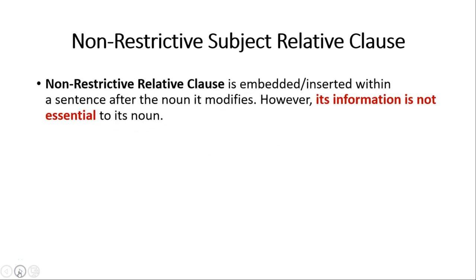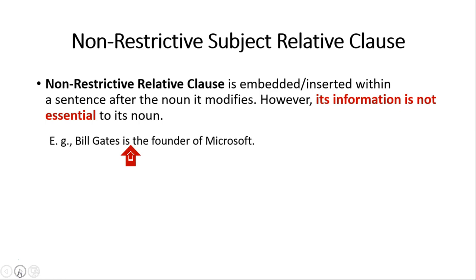Now let's talk about the non-restrictive subject relative clause. A non-restrictive relative clause is embedded within a sentence right after the noun it modifies. However, its information is not essential to the noun. For example: 'Bill Gates is the founder of Microsoft.' This sentence stands alone. We can introduce additional information about Bill Gates that does not restrict the noun. Since we're modifying the subject, the clause comes right after it.